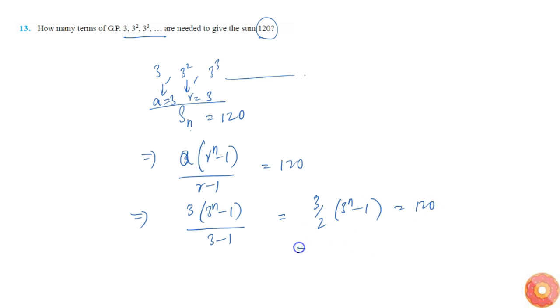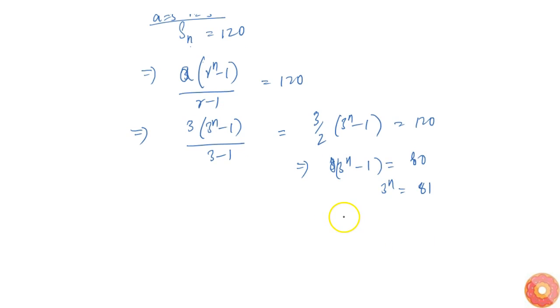So that will imply 3 power n minus 1, or this is equal to 2 into 240, this is 80. So 3 power n equals 81. From this we know this right hand side is 3 power 4.